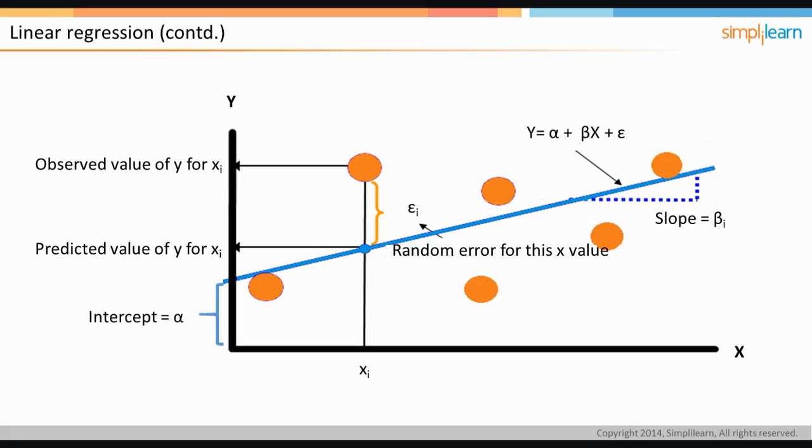The dots in orange are the observed values of the dependent variable. The fitted linear regression line is drawn in blue. Let us now look at the graph in detail.